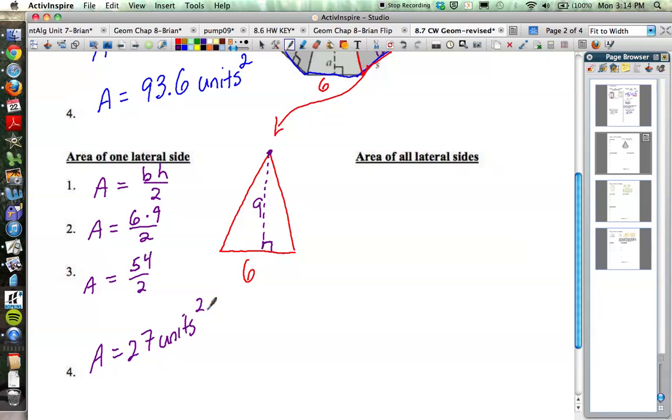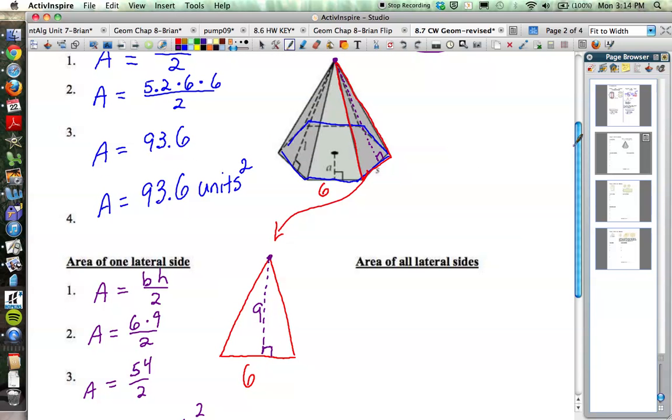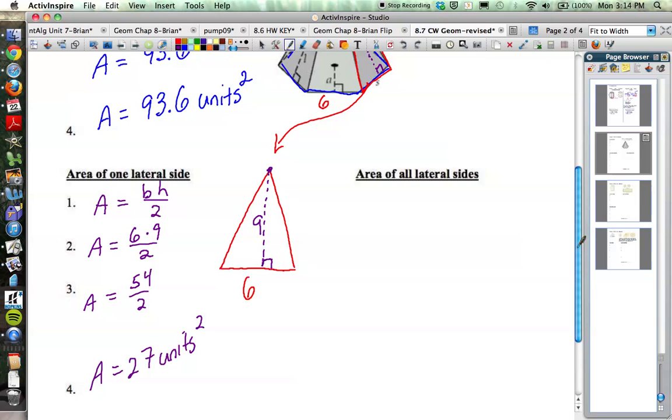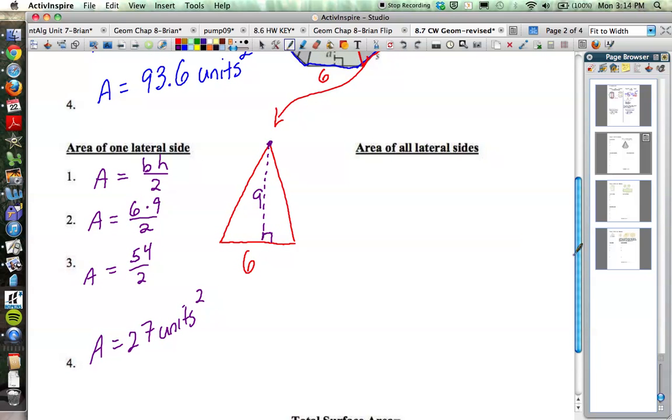Now, how many triangles are there? Well, since it is a hexagonal pyramid, there are 6 sides of the base, and therefore 6 of those triangles all the way around. They're all congruent triangles, since it is a regular hexagon. So therefore, the area of all the lateral sides would be 27 times 6, because there are 6 of those triangles, and that is 162 square units.